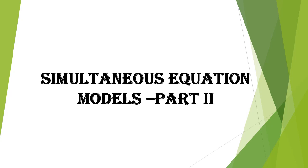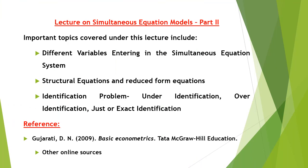We have dealt with the question of what happened to the estimators when there is simultaneity. Now in this second part, our discussion mainly focuses on the nature and types of variables entering into the simultaneous equation problem, the difference between structural equations and reduced form equations, and the problem of identification: under-identification, over-identification, and just or exact identification.